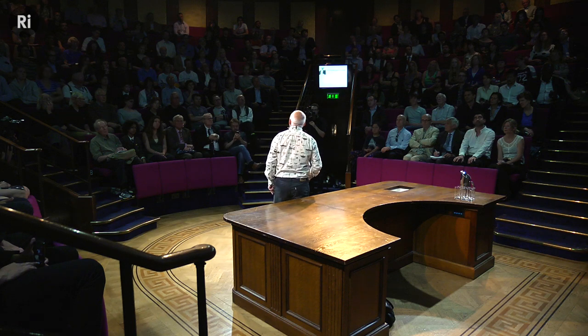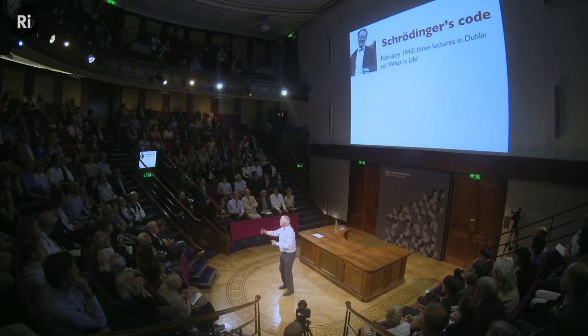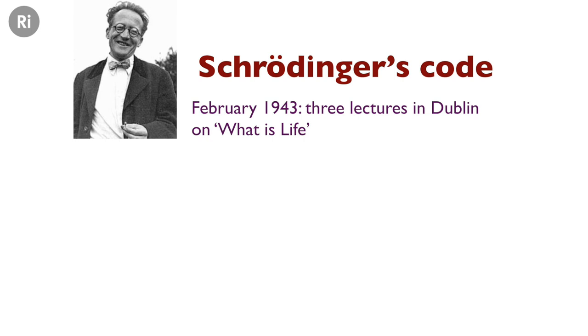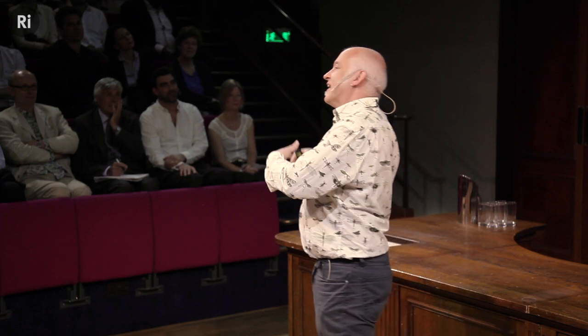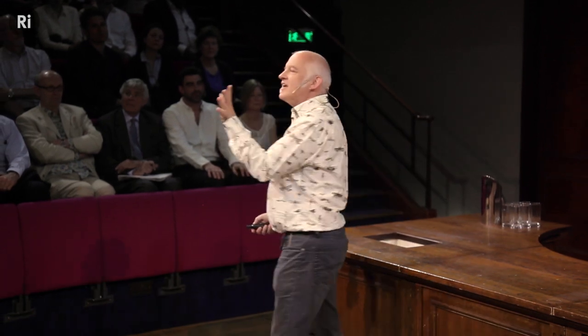The first person to talk about a code — not a genetic code, but a code — was Erwin Schrödinger. Schrödinger had to give public lectures in Dublin; he'd escaped from Austria when the Nazis took over and was given a post there. He decided to talk about the latest biological research. It ended up being three lectures, they were so popular he had to repeat them, and he later went on tour around Ireland giving these lectures. With his physicist's eye, he was trying to understand how biology works. The book of his lectures is still in print and well worth reading.